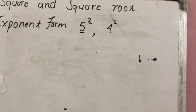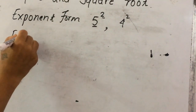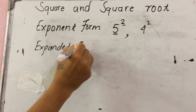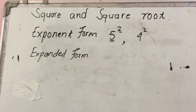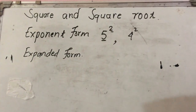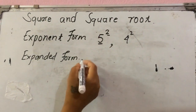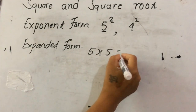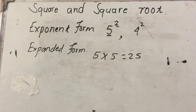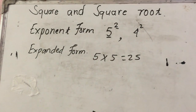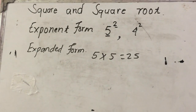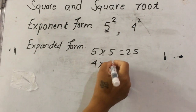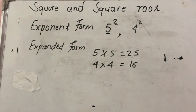Now let's look at expanded form. In expanded form, 5 squared is written as 5 times 5, which equals 25. Similarly, 4 squared in expanded form is written as 4 times 4, which equals 16.